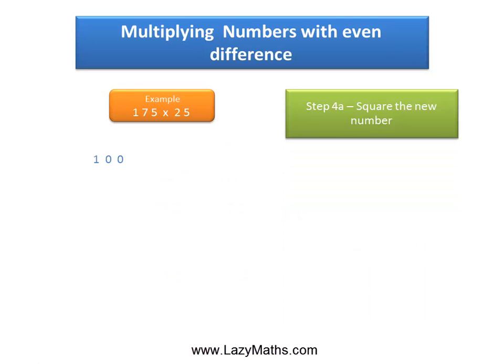Taking this number 100, the next step involves squaring it. Square of 100 is 10,000, which is very easy to know.